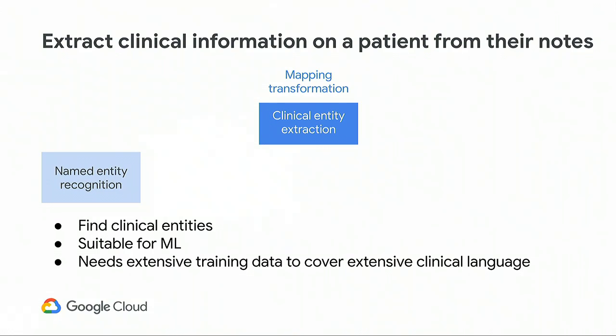Let's talk about our approach to natural language processing — this is a preview of what we're building at Google. We follow five steps. The first is named entity recognition: scanning all of the text, finding all of the clinical entities and concepts, identifying not just the clinical concepts themselves but also where they appear in the document. This requires lots of labeled data across many medical specialties, ICD-10 codes, procedure codes, and LOINC codes.